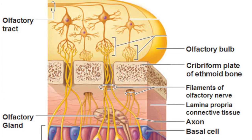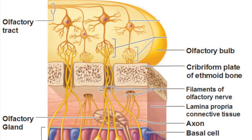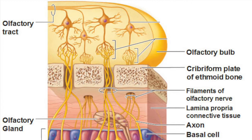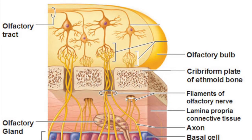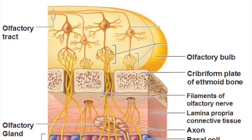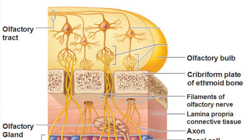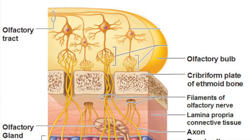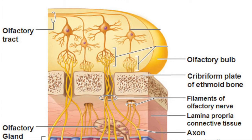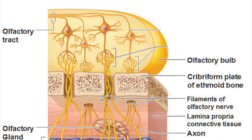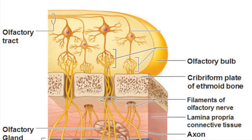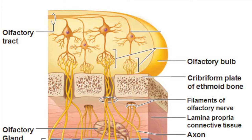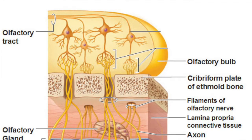The other pathway flows to the hypothalamus, amygdaloid body, and other regions of the limbic system, where emotional responses to odor are elicited. Smells associated with danger, such as smoke, cooking gas, or skunk scent, trigger the sympathetic fight-or-flight response. Appetizing odors stimulate salivation and the digestive tract, and unpleasant odors can trigger protective reflexes such as sneezing or gagging.